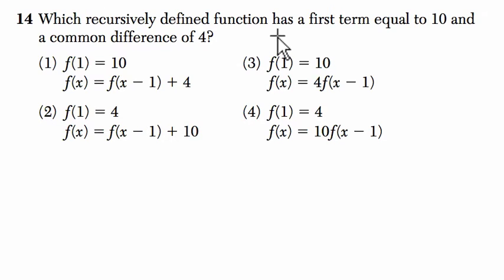Okay, so we've got a recursively defined function here, and they tell us that the first term equals 10, and there's a common difference of 4, and they want us to match these choices with those parameters. In other words, which of these choices has a first term equal to 10 and a common difference of 4?